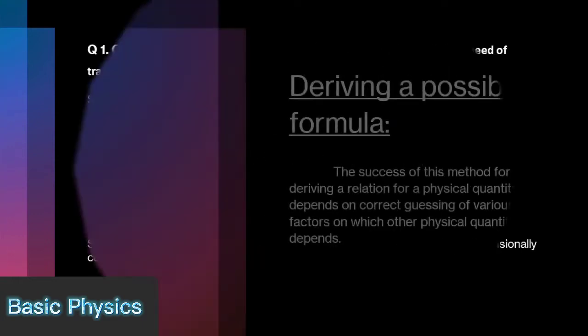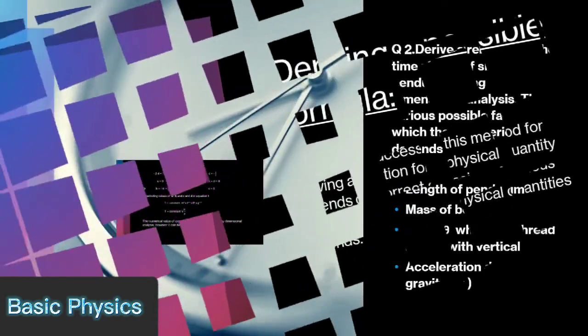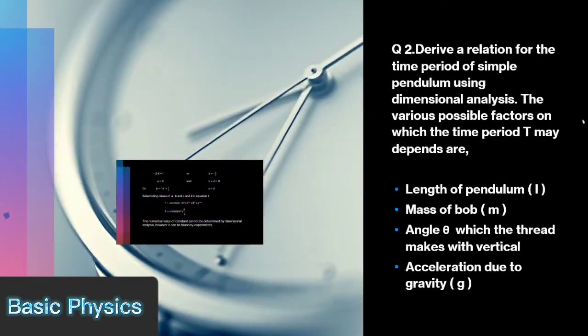Deriving a possible formula: The success of this method for deriving a relation for a physical quantity depends on correct guessing of various factors on which other physical quantities depends. Derive a relation for the time period of simple pendulum using dimensional analysis.